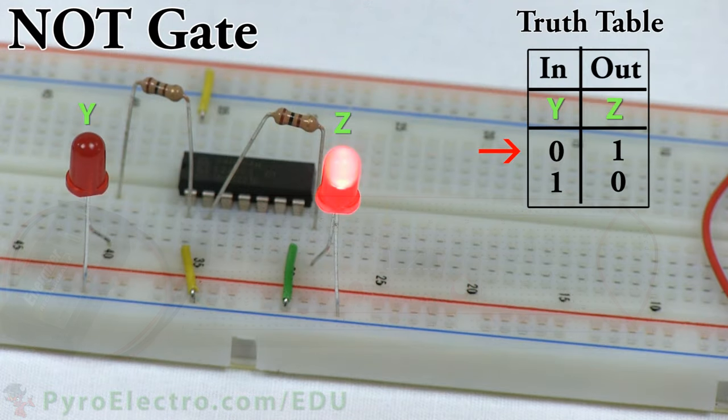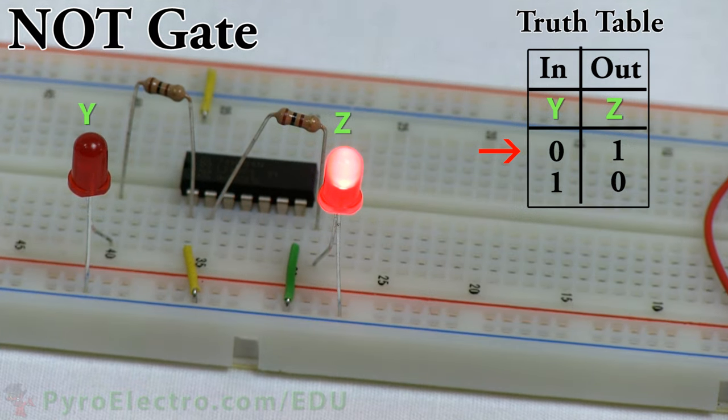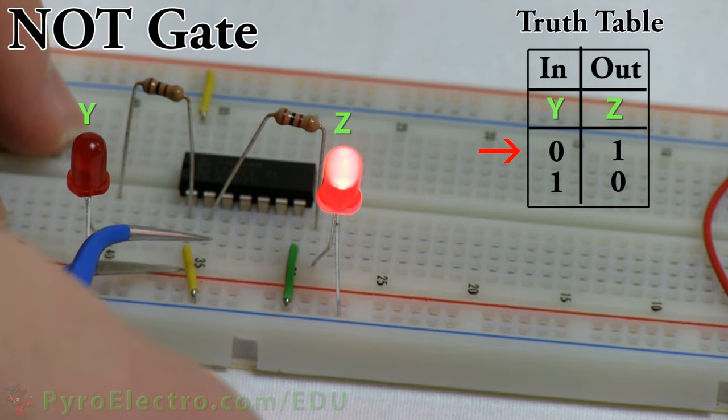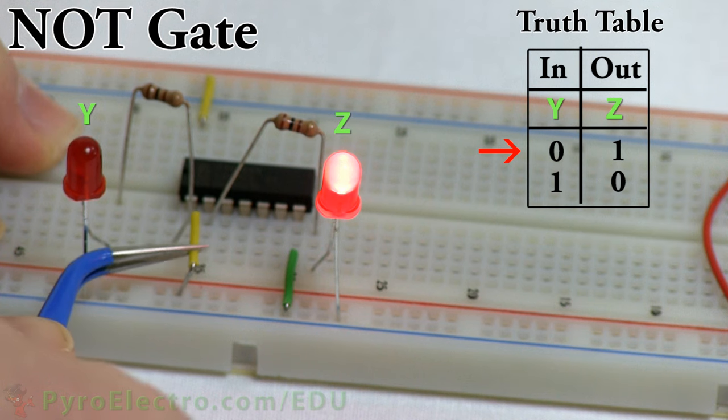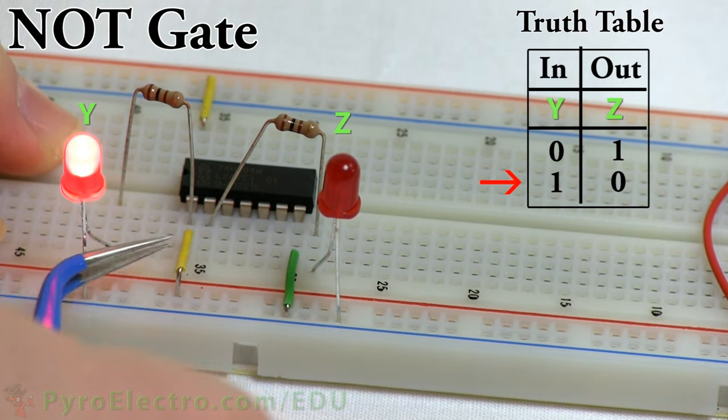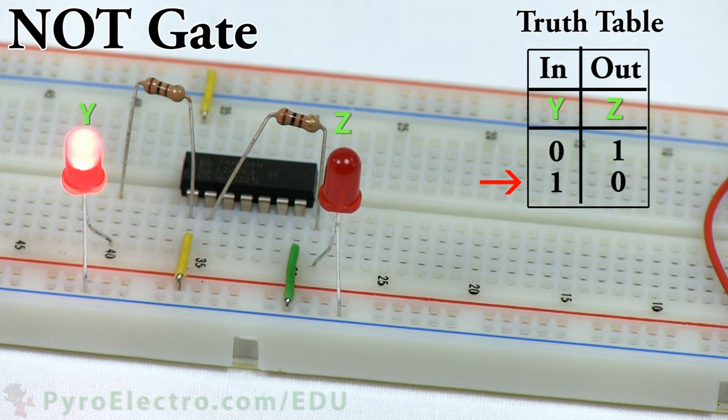When logic 0 is connected to the input of the 74HC04 at pin 1, the output at pin 2 is a logic 1. And if we change the input to a logic 1, the output changes to a logic 0. Since this 74HC04 is an inverter, it is working perfectly, and we have just verified its truth table.